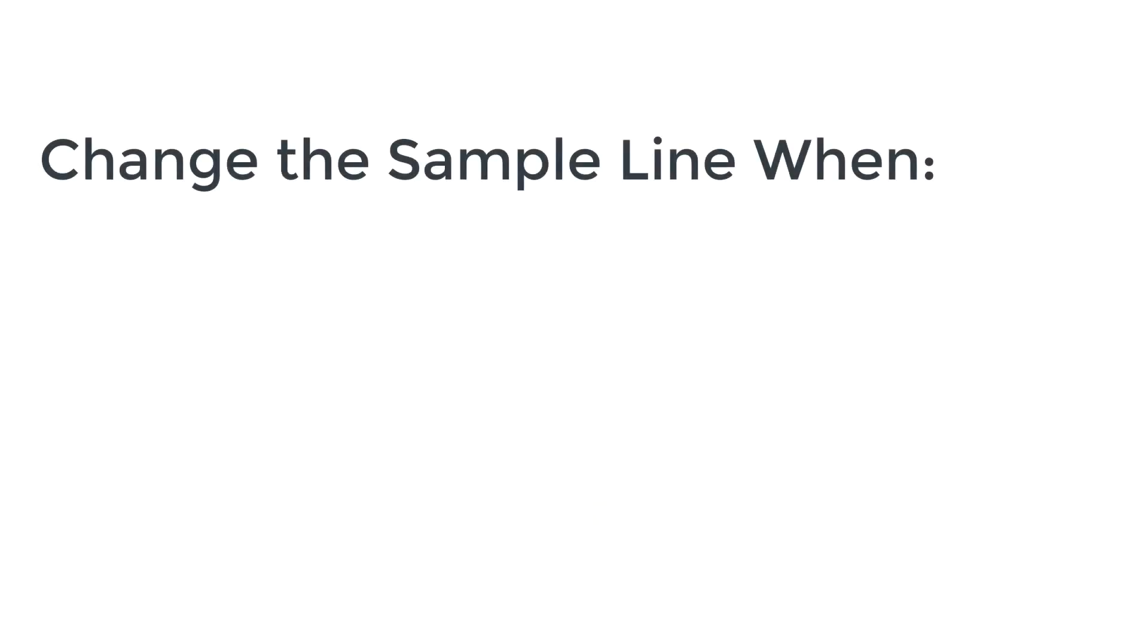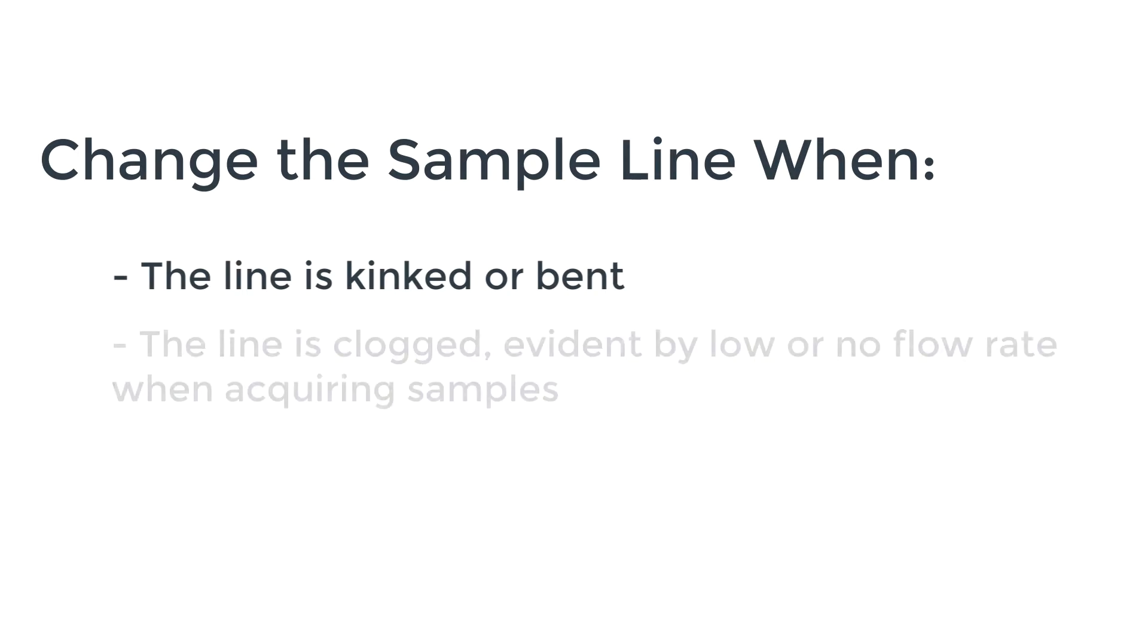There are a couple situations when you'll need to change the sample line on your Cytec Aurora or Northern Light Cytometer. One is when the line has become kinked or badly bent, as this will cause sample flow instability.